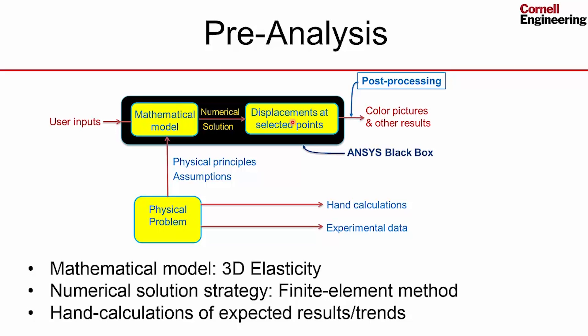In the bike rank case, we have one part, now we have multiple parts, and we will see how the numerical solution strategy has to be extended to deal with that. And then the last element of pre-analysis is to make hand calcs of the expected results and trends.